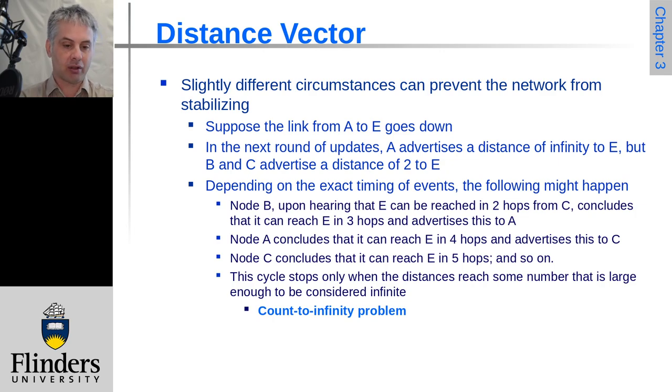And now we have some race conditions happening. So if B hears that E can be reached in two hops from C, it will conclude that B can get there in three hops and it advertises this to A. A will go, okay, so three plus one is four. I can get there in four hops and advertises this to its neighbours.